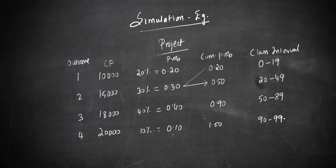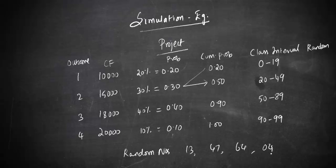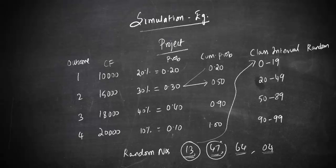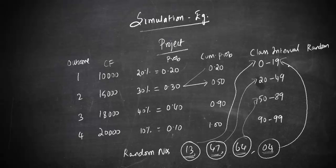To find the possible cash flow using the simulation method, you need to generate random numbers. I'll put some random numbers here: 13, 47, 64, and 04. Now I have to check where these random numbers fit into the class intervals. 13 falls in the interval 0 to 19, 47 falls in 20 to 49, 64 falls in 50 to 89, and 04 again falls in 0 to 19.